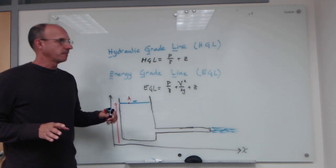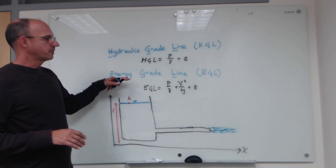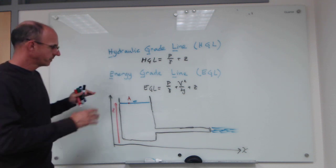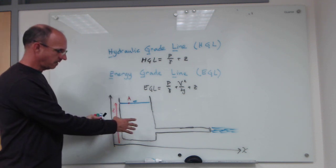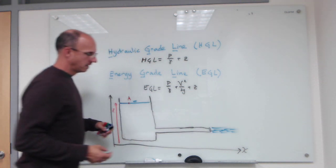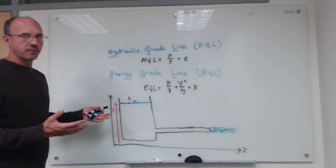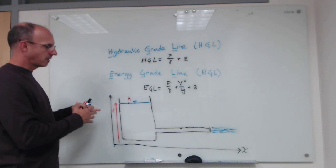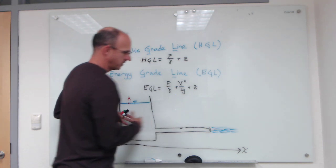Okay, this is part two of the introduction to energy grade lines and hydraulic grade lines. I've got a system here with a tank filled with liquid—we could say it's water—connected to a pipeline. The idea behind energy grade line and hydraulic grade line analysis is to be able to describe how the energy is changing along the length of a pipeline.